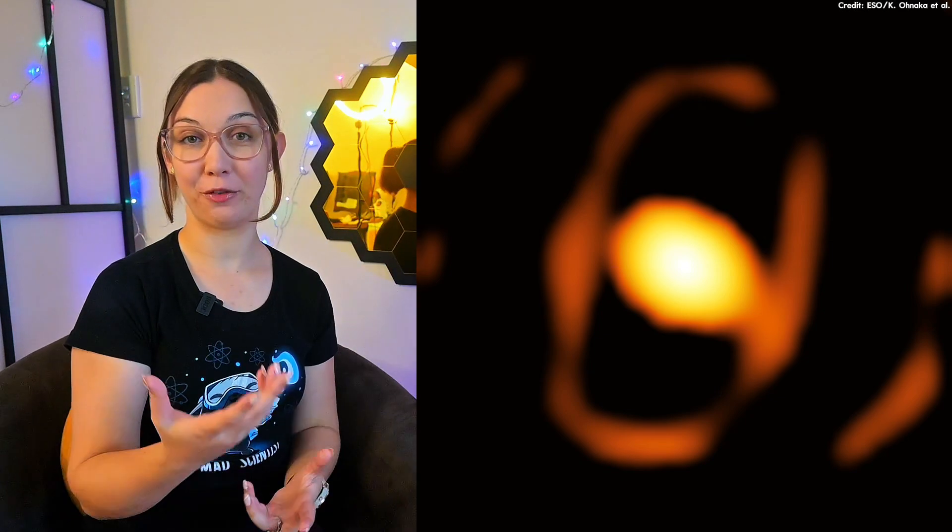So let's talk more about this cocoon of dust surrounding WOH G64. This dust envelope is a common feature for red supergiants nearing the end of their lives. They form as the star sheds its outer layers, releasing material rich in elements like silicon and oxygen. But what sets WOH G64 apart is its unexpected shape. Previously, astronomers thought it would have more of a spherical dust cocoon. But this new data has revealed it has more of an elongated shape, which has us asking, what's causing this elongation?